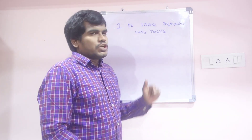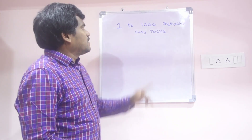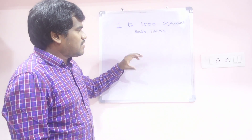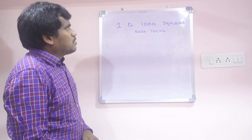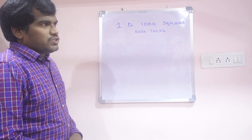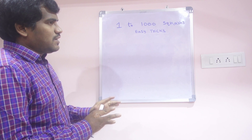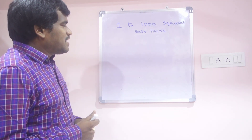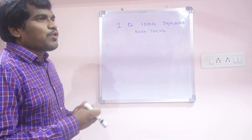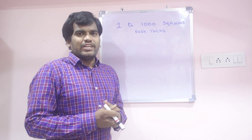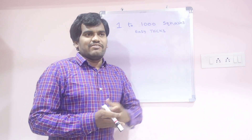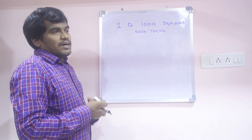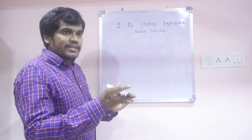Welcome to Maths Check Channel. Today we will discuss 1 to 1000 squares. I will tell you very easily, so don't fear about up to 1000 squares. I will tell some important shortcuts, and then you can find out very easily. I will tell one example, based on 10, 100 and 1000.